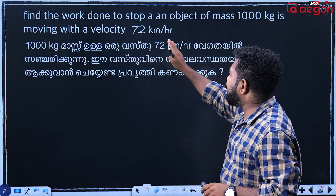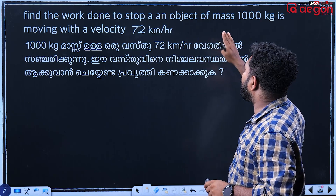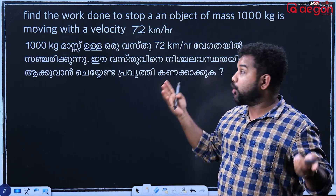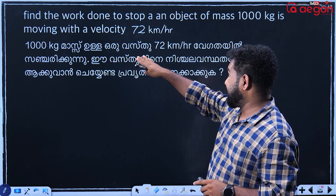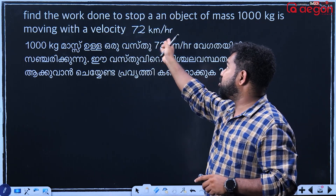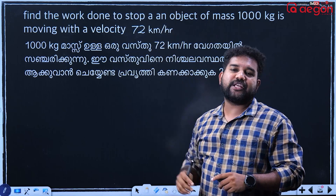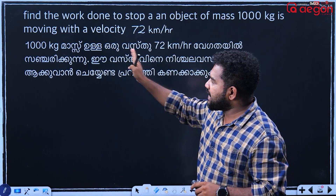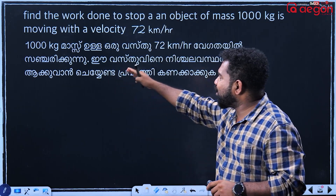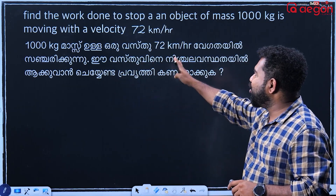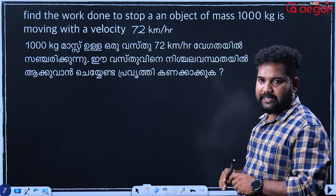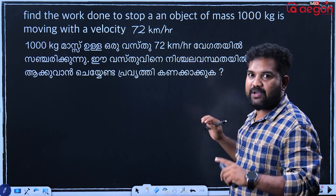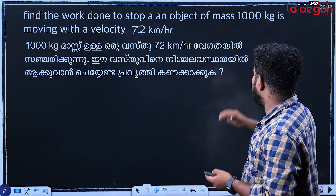Find the work done to stop an object. A mass of 1000 kg is moving with a velocity of 72 km per hour. The mass is 1000 kg and the speed is 72 km per hour.